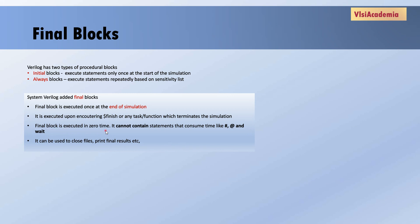A final block cannot contain statements that consume time, like hash, at, and wait. To summarize, a final block cannot consume simulation time but is otherwise similar to an initial block. You can place a final block anywhere you can place an initial block, but all final blocks are executed only once at the end of simulation. The use case of final blocks is to define actions that should be performed at the end of simulation, such as performing cleanup tasks.